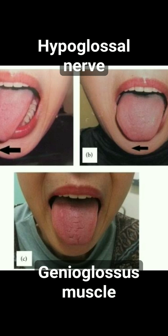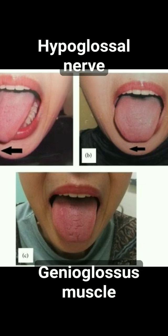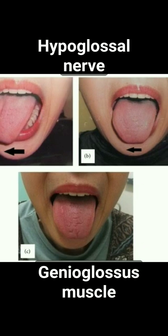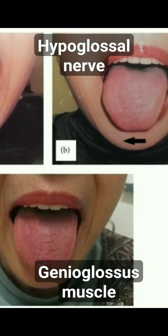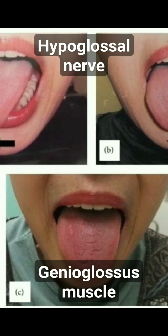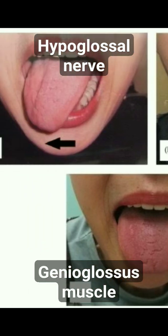These tongue muscles are supplied by the hypoglossal nerve. Here we can see a patient where there is a deviation of the tongue towards the right side — when asked to protrude, there is a deviation of the tongue towards the right side.